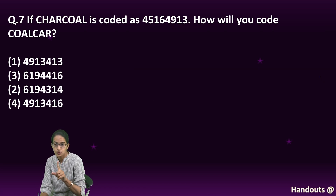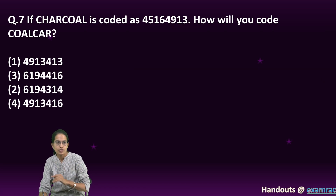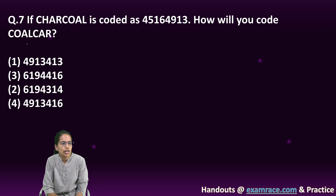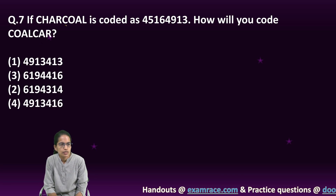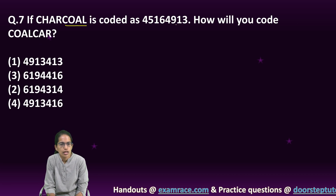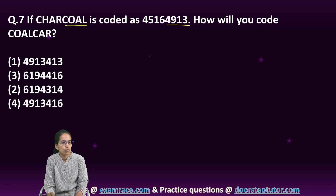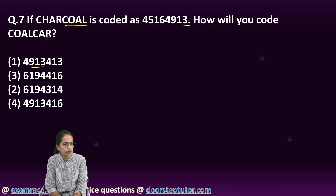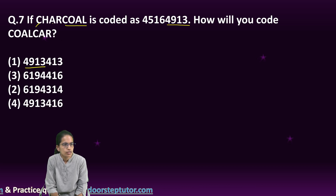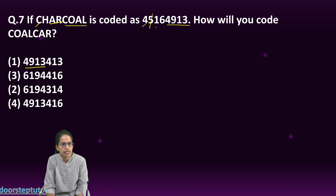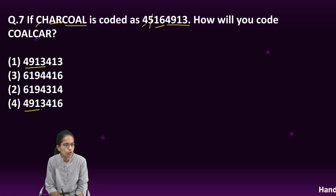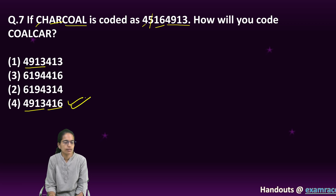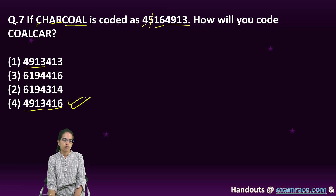Since Ravi does not have any brother or sister, that confirms the answer. Next, a coding question: charcoal and coal — how do we code them? Coal is coded as 4-9-1-3, and car removes certain letters (code 4-1-6). So option D is the right answer. A very direct question.